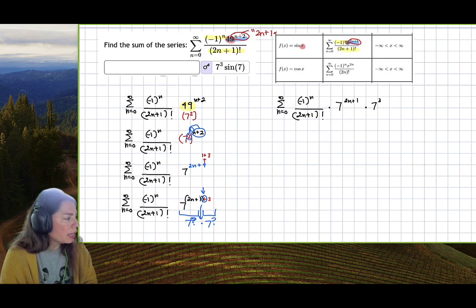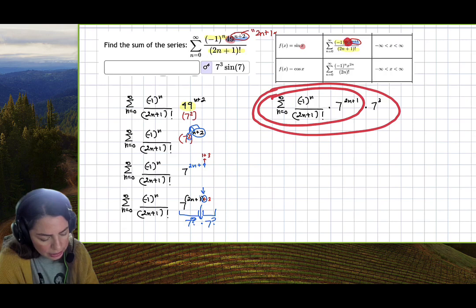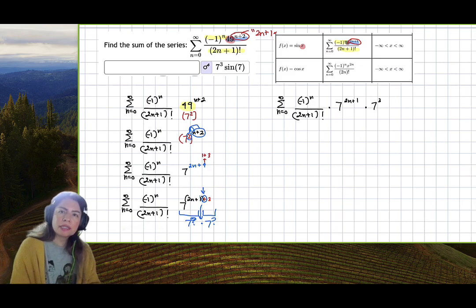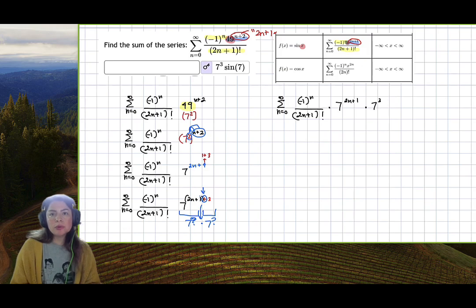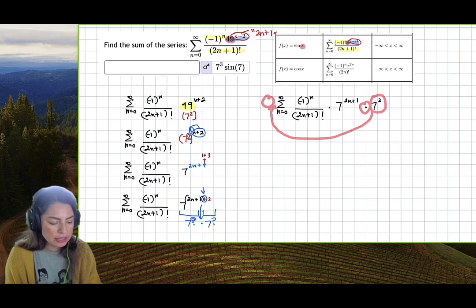At this point we have it. We have this piece here. x is the base 7, but I have this extra 7 cubed. Now I can use properties of summation. Summations have the constant multiple rule. Notice I have a multiplication and a constant. I can throw that in front of the sum.